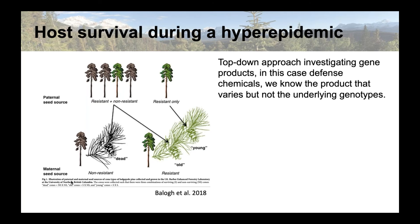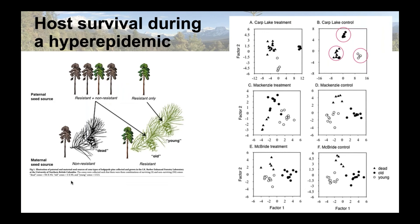Even in the controls before the experiment was run, you can see that the phenotypes of those different cones strongly cluster — circled in pink here — suggesting there's definitely a genetic component to what's happening in this stand. We can then use these progeny to understand the underlying genetics of resistance. So what we've done is use the extremes: the dead and the young or alive individuals as phenotypes. These seedlings are progeny of mountain pine beetle casualties or survivors and represent those extremes.